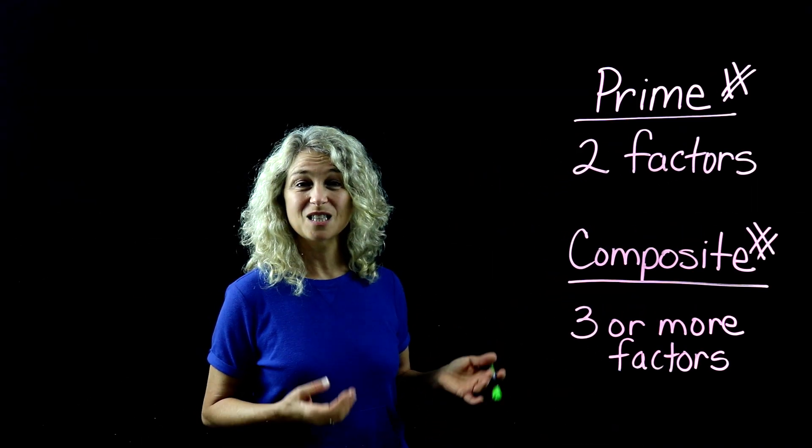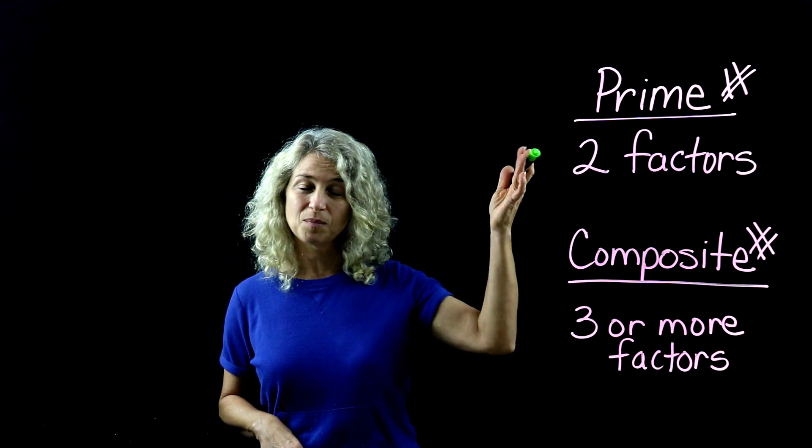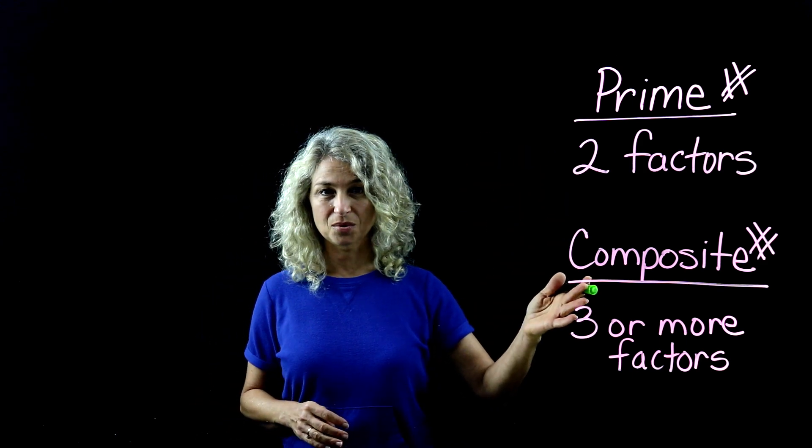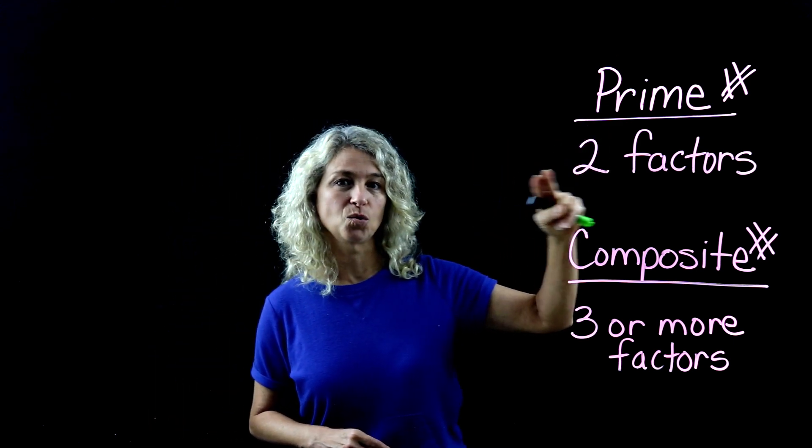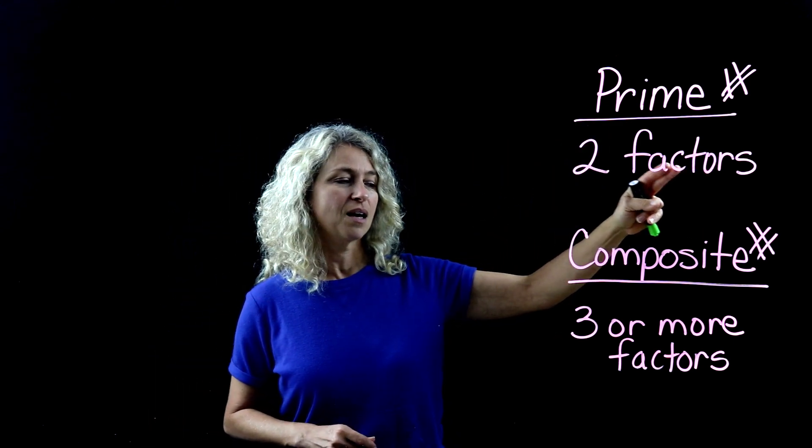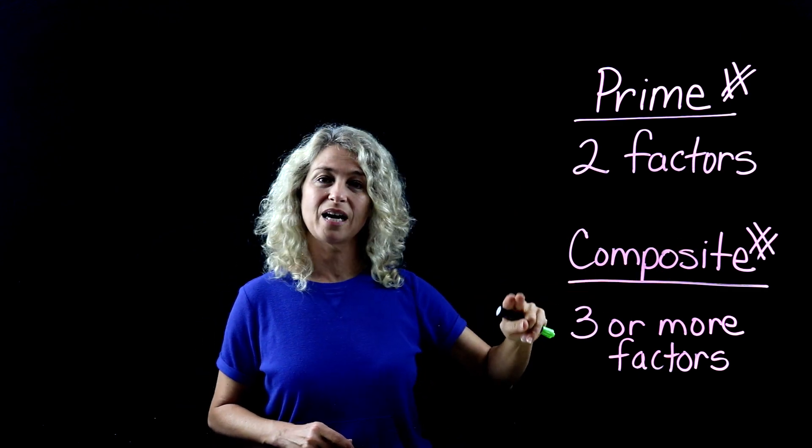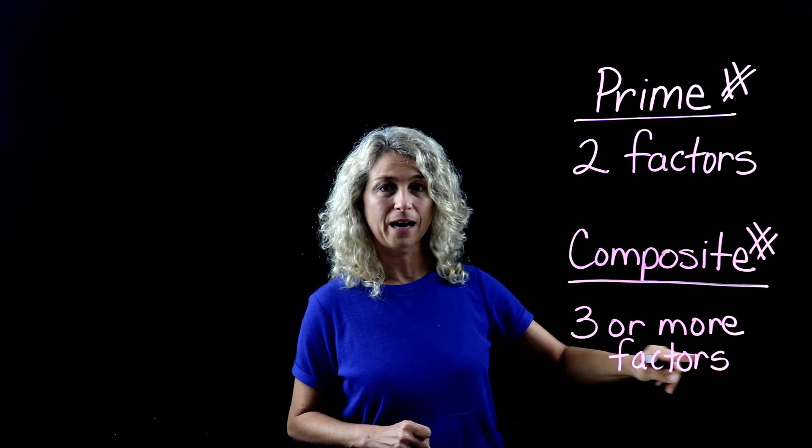Hey everybody! Let's learn about the difference between prime numbers and composite numbers. Prime numbers are numbers that have only two factors. Composite numbers are numbers that have three or more factors.